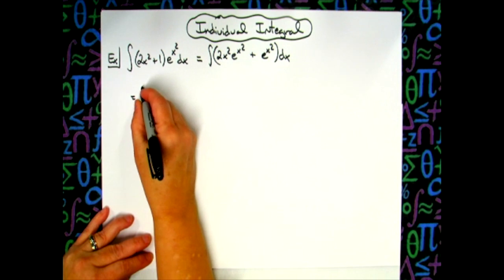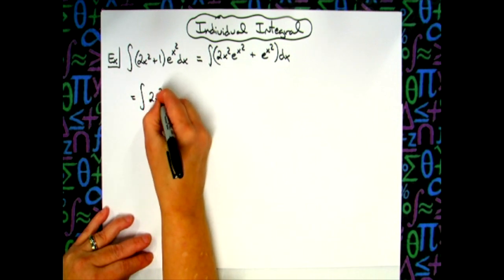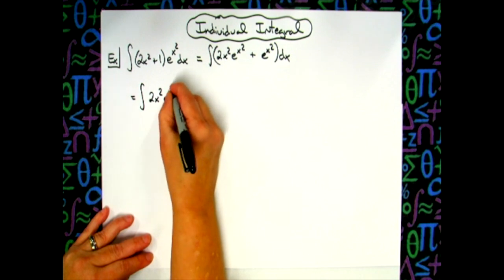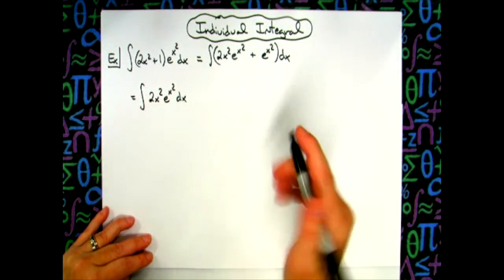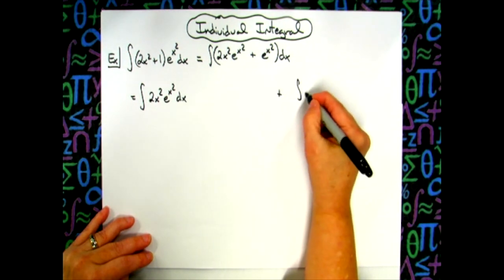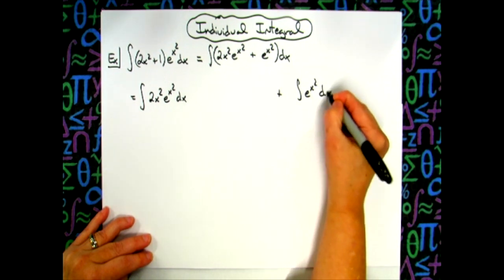So I'm going to have the first one, which is the integral of 2x²e^(x²) dx, and then leaving myself plenty of room here, we're going to have the integral of e^(x²) dx.